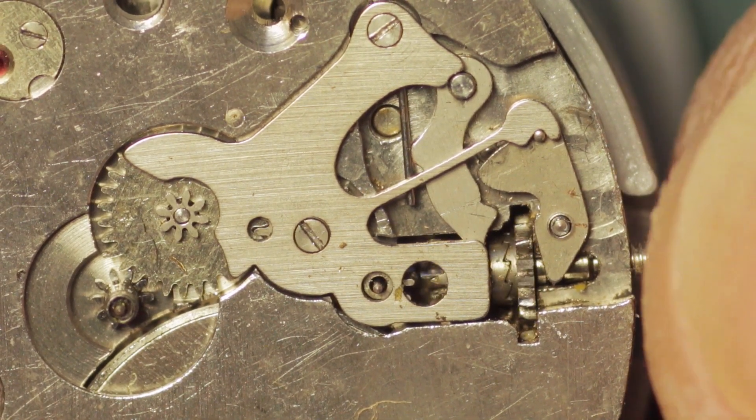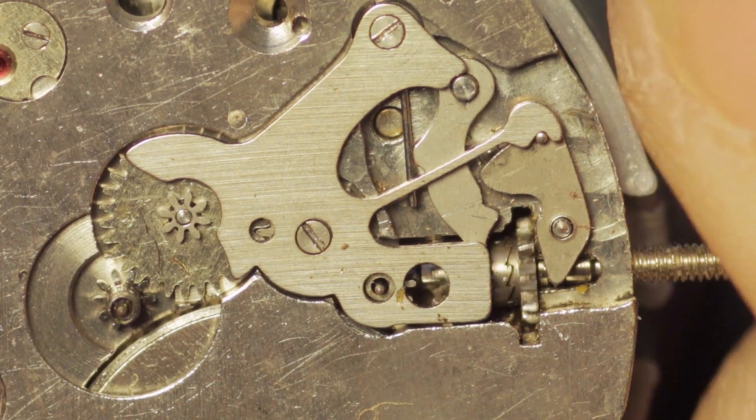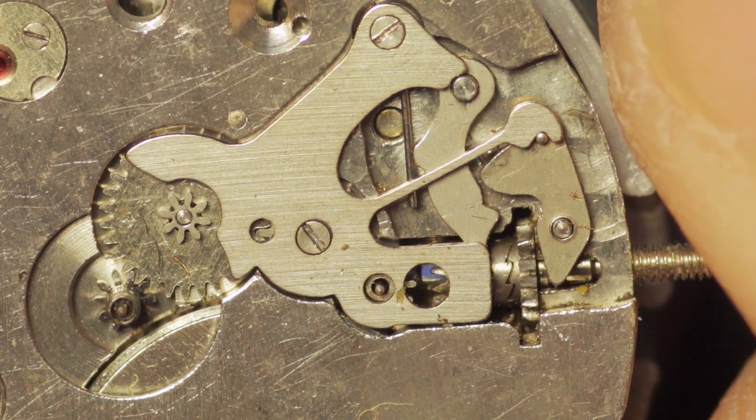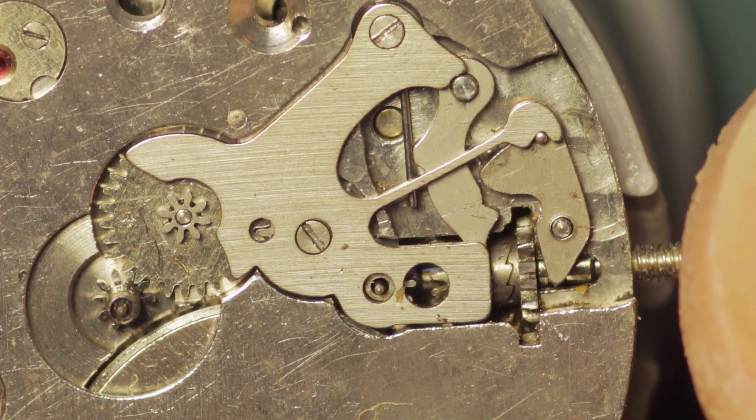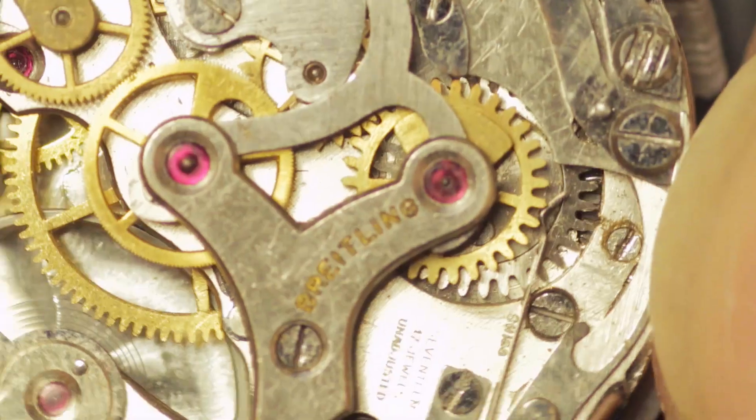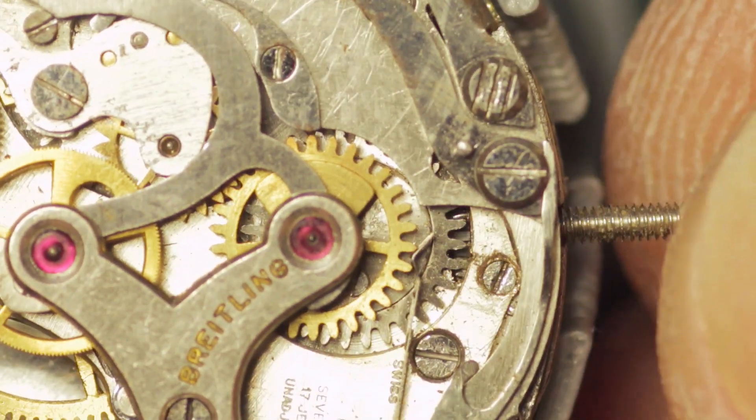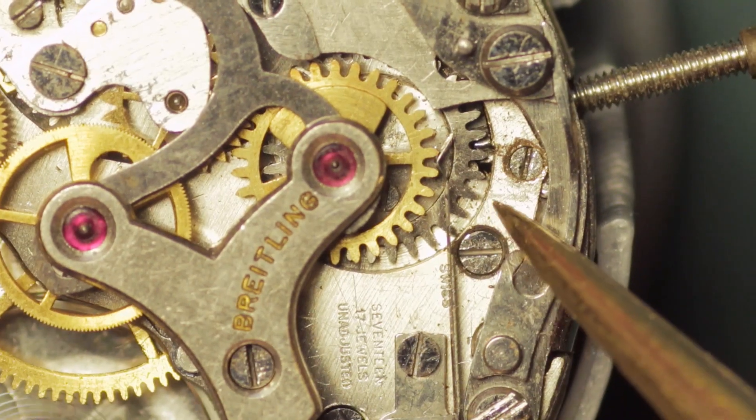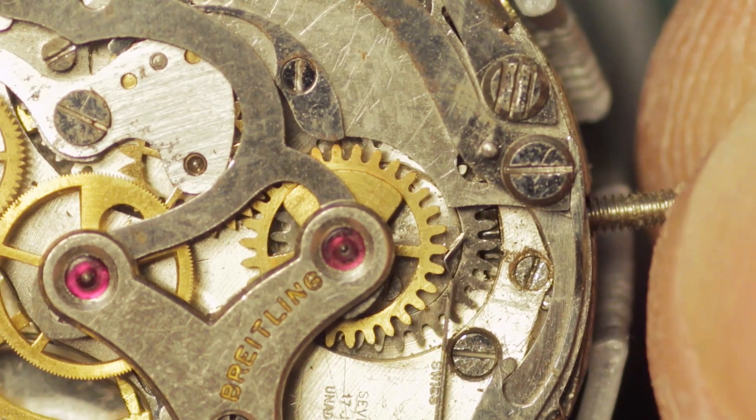As you click that back in, it then allows it to engage the winding pinion. Now if I turn that winding pinion, you can see that there's wear on some of those teeth. If I flip this over so that you can see the rear side where it contacts the crown wheel just down here, as you turn that...